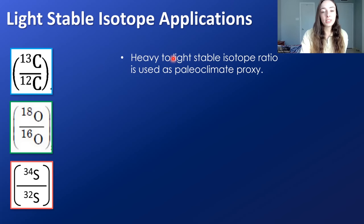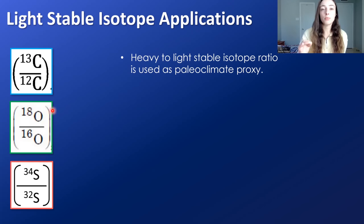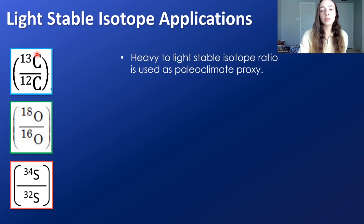We use the heavy-to-light stable isotope ratio — for example, carbon-13 to carbon-12 ratios, oxygen-18 to oxygen-16 ratios, and sulfur-34 to sulfur-32 isotopes. These numbers represent protons plus neutrons. Heavy and light refer to mass: more neutrons means heavier nucleus, fewer neutrons means lighter. We call isotopes with more neutrons 'heavy' and those with fewer 'light.'